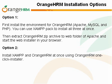For installing OrangeHRM on your PC, you basically have two options. One is to first install Apache, MySQL, and PHP on your PC and then run the OrangeHRM web installer — we recommend XAMPP for installing these easily. The second option is to use the OrangeHRM one-click installer, which installs XAMPP and OrangeHRM at once. If you haven't already installed Apache, MySQL, and PHP on your PC, this would be the fastest solution.